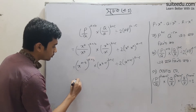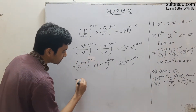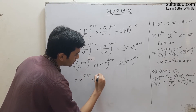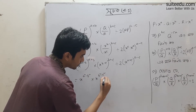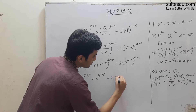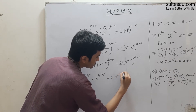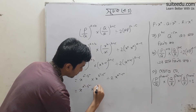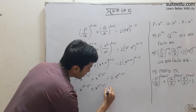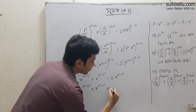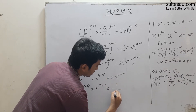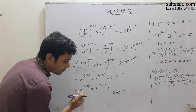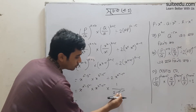For part three, we apply the identity: a squared minus b squared. So we get x to the power B squared minus C squared, into x to the power A squared minus C squared, into x to the power A squared minus B squared.